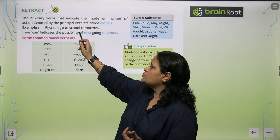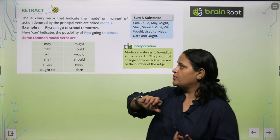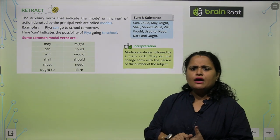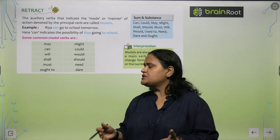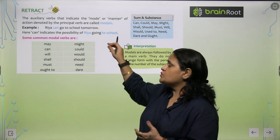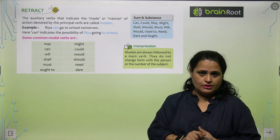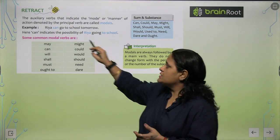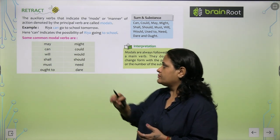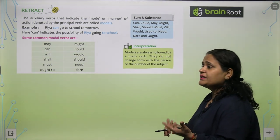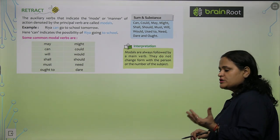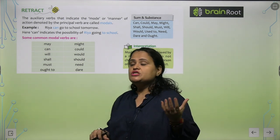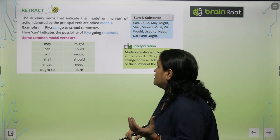For example: 'Rhea can go to school tomorrow.' Here, 'can' indicates the possibility of Rhea going to school. So the modal here is 'can' — kyunki yeh dikha raha hai ki possibility hai ki Rhea school jayegi.